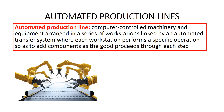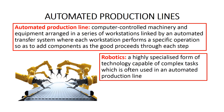The first technology strategy is automated production lines. An automated production line consists of computer-controlled machinery and equipment arranged in a series of workstations linked by an automated transfer system like a conveyor belt, where each workstation performs a specific operation to add components as the good proceeds through each step. An automated production line often incorporates robotics — a highly specialized form of technology capable of complex tasks. Find these terms in your vocabulary sheets and write in the definitions.